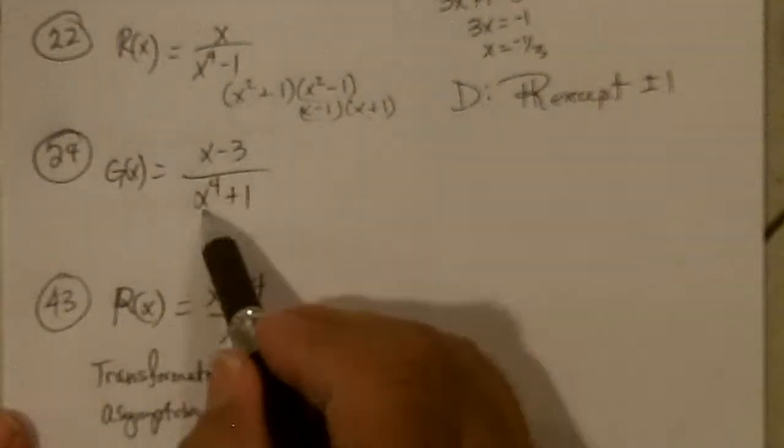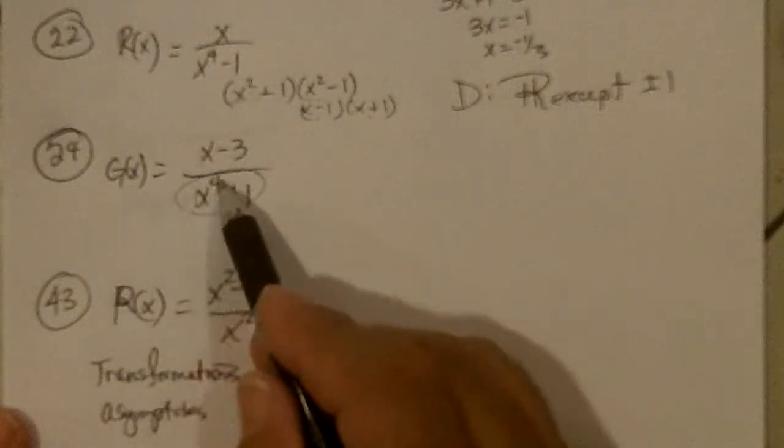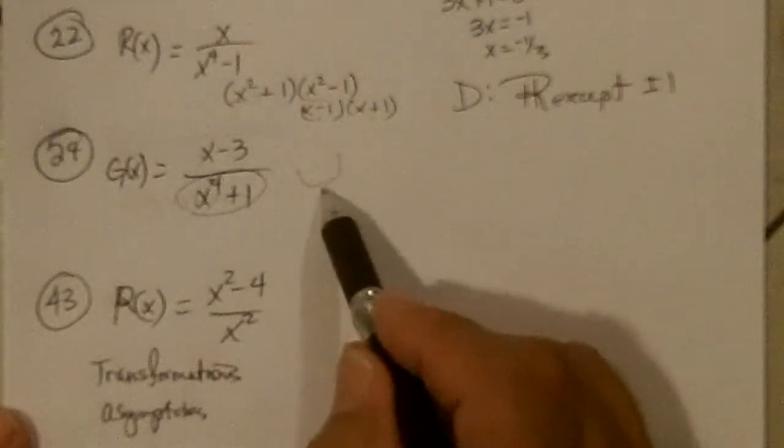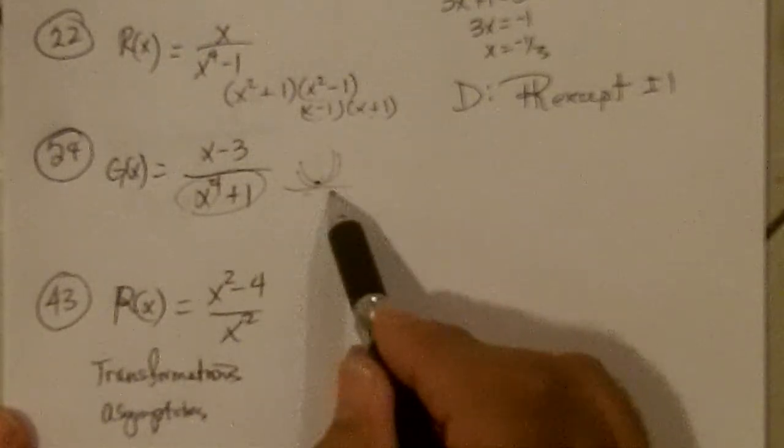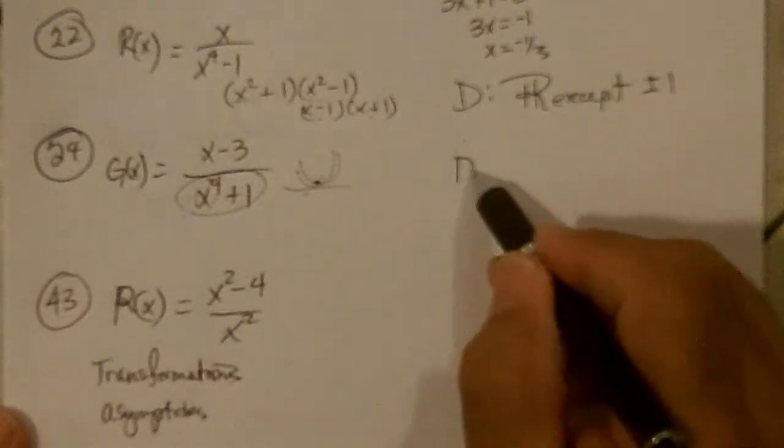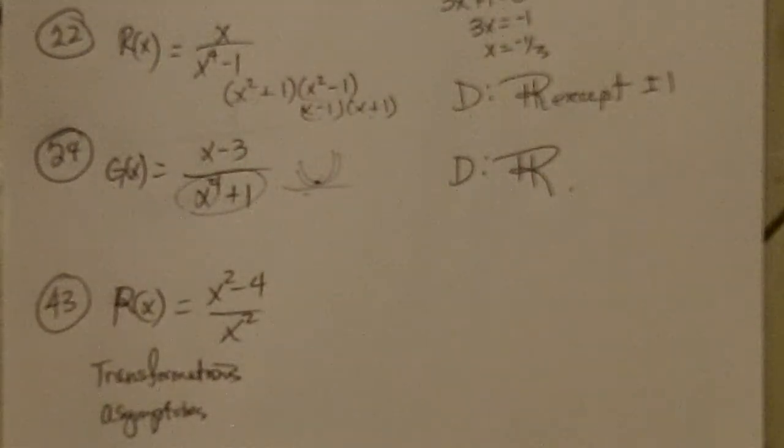24, x to the 4th minus 1 does not factor. The 4th looks like this. If you move it up 1, it's never 0, and so the domain is going to be all reals. Notice I didn't talk anything about the numerator, because that tells you x-intercepts. It doesn't tell you what x can't be.